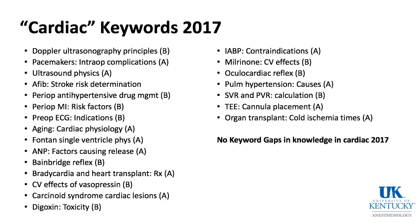Digoxin toxicity and balloon pumps — don't use them when you have severe or moderate aortic insufficiency, because they inflate during diastole and will increase backward flow through the aortic valve, dilating the left ventricle. Cardiovascular effects of milrinone: inotropy and vasodilation of the systemic vasculature, so it's an inodilator. Oculocardiac reflex: when you tug on the eyeball you can get a reflex through the trigeminal nerve back through the vagus nerve, slowing the heart rate. Pulmonary hypertension — causes like bad COPD and pulmonary emboli — how to calculate systemic vascular resistance and pulmonary vascular resistance, and other keywords. Interestingly, there were no knowledge gaps in cardiac in 2017.